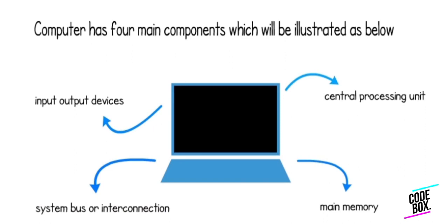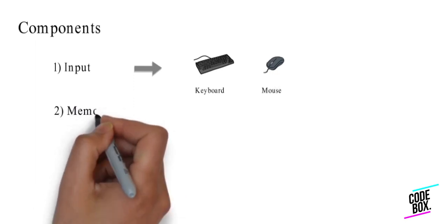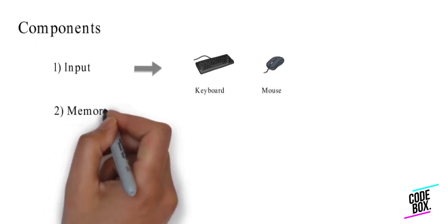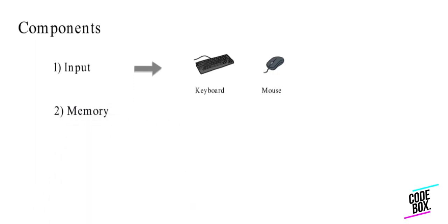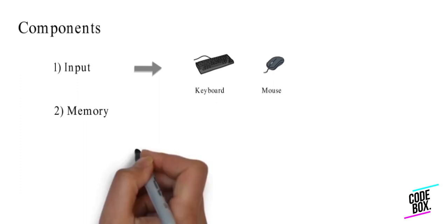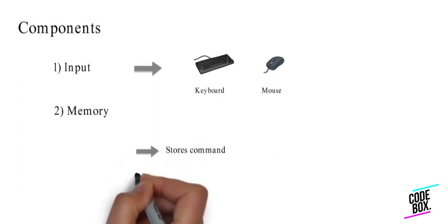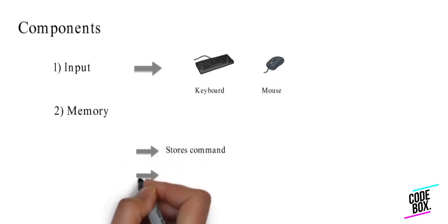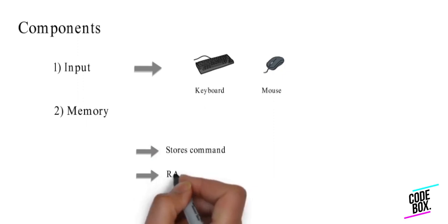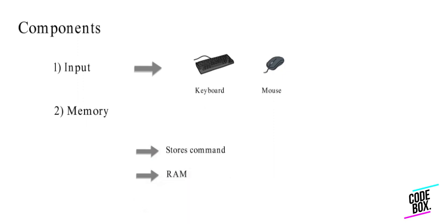Here are the components of the computer. The input devices include keyboard and mouse. Memory stores all the instructions, data, temporary values, and commands. The RAM is the main memory.